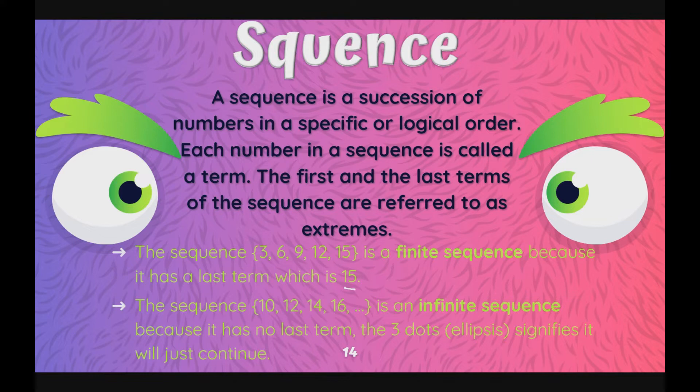Well, the sequence 10, 12, 14, 16, and so on is an infinite sequence because it has no last term. The three dots that we have seen here is called ellipsis and it signifies that the sequence just goes on or continues.